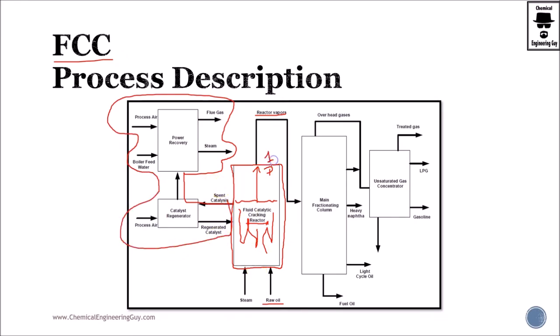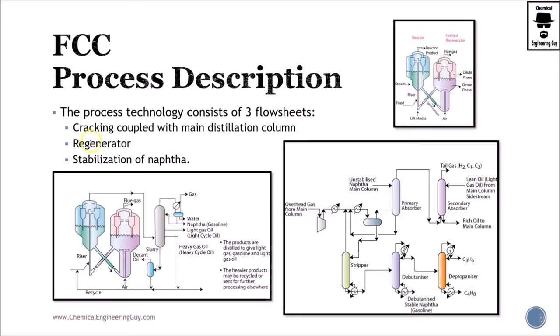So we have number one, number two. Now the reactor vapors must be treated, must be stabilized, must be fractionated. And this will be the third part. Let's say the main fractionation unit and we will get all the final products. So we have three main units. The reactor, the regenerator and the stabilization of the products.